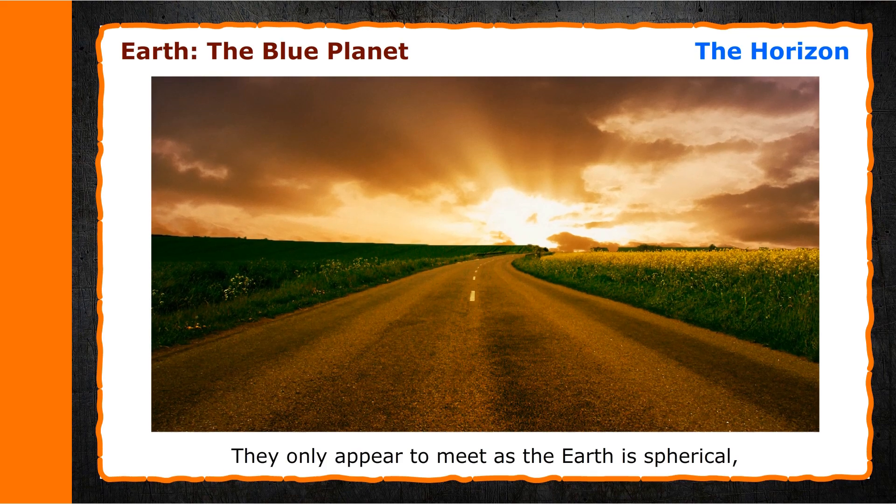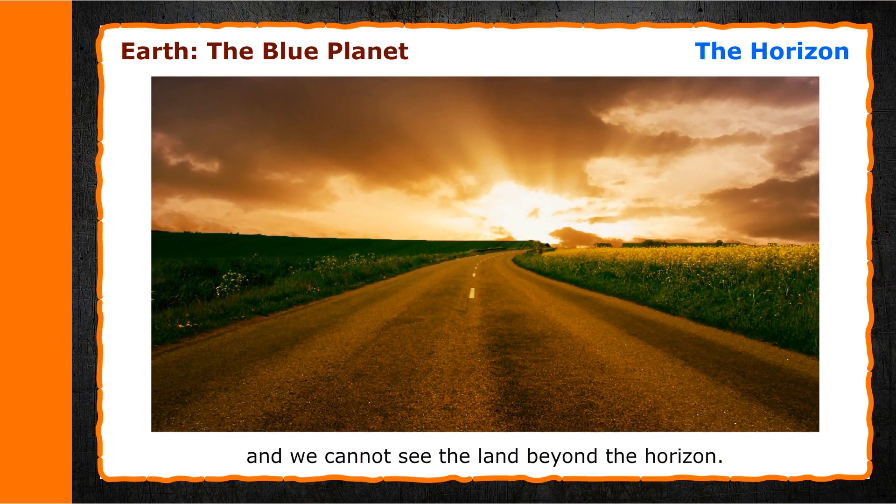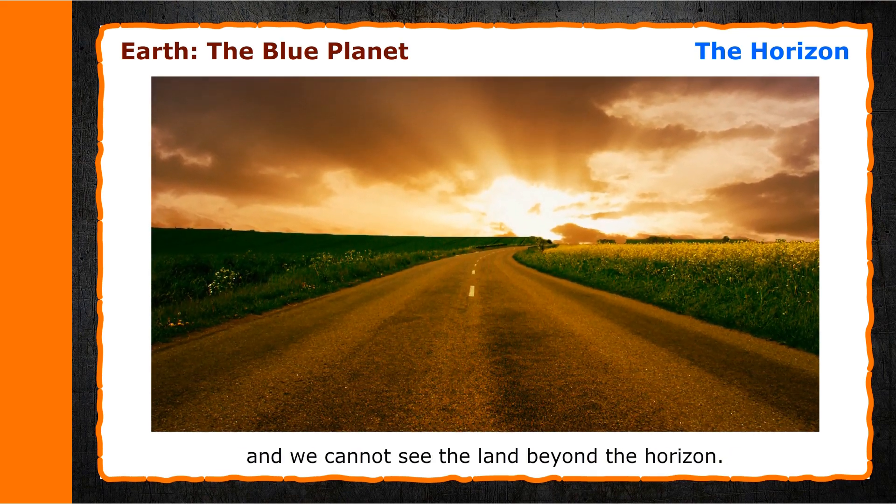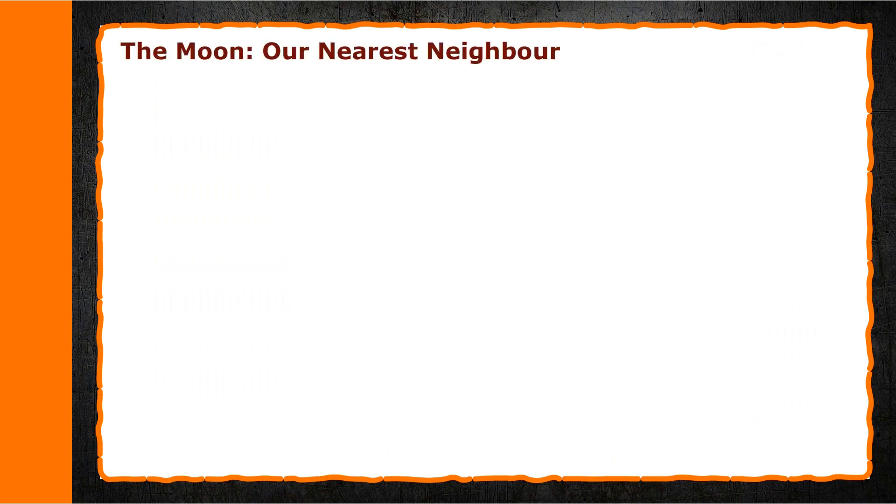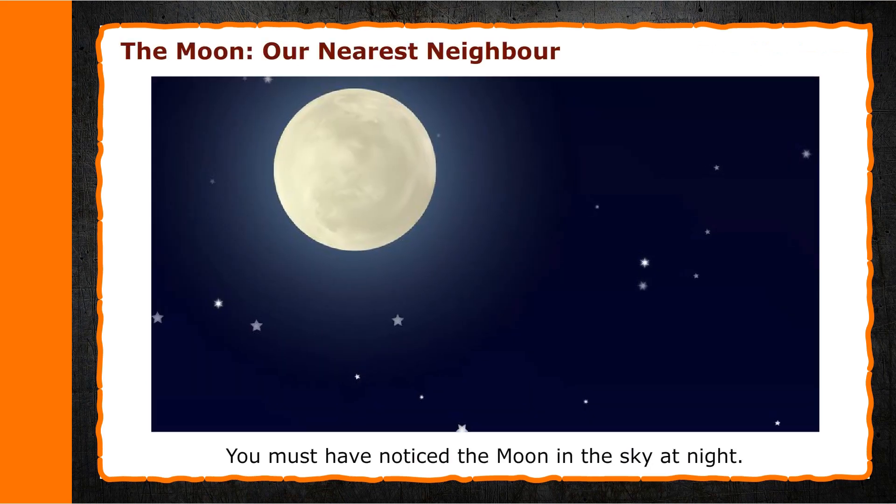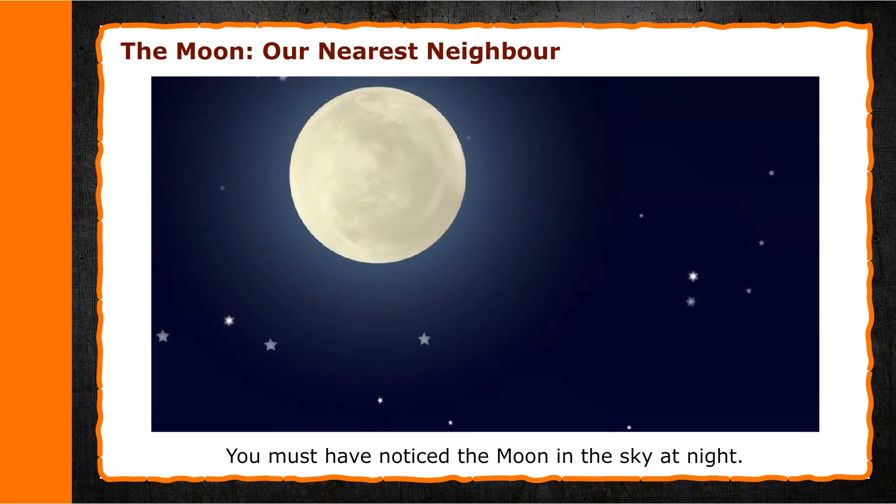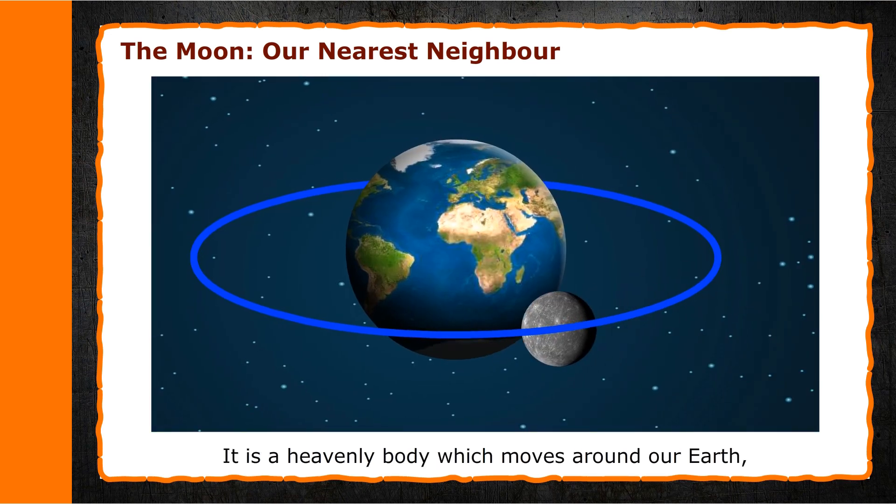They only appear to meet. As the Earth is spherical, we cannot see the land beyond the horizon. The Moon: Our Nearest Neighbor. You must have noticed the moon in the sky at night. It is a heavenly body which moves around our Earth, just as the Earth moves around the Sun.